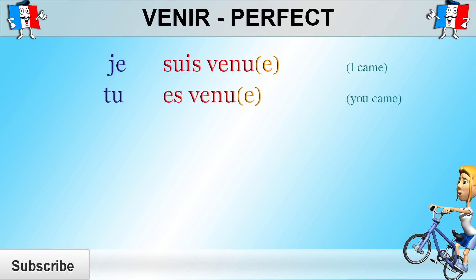And remember only add the e if the subject refers to a girl. Il est venu. Elle est venu. On est venu. So if you're using elle, add the e. If you're using on and on refers to a girl or several girls, then you need to add the e. And if on refers to several people, you need to add the s.